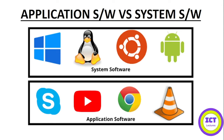Many people often confuse the difference between application software and system software. Typically, a system software is also known as an operating system — software that actually manages the hardware of a computer, whereas application softwares are used by users. From the diagram you can see examples of system software like Android and Windows, and for application software you can see the browser, Chrome, and the YouTube icon.